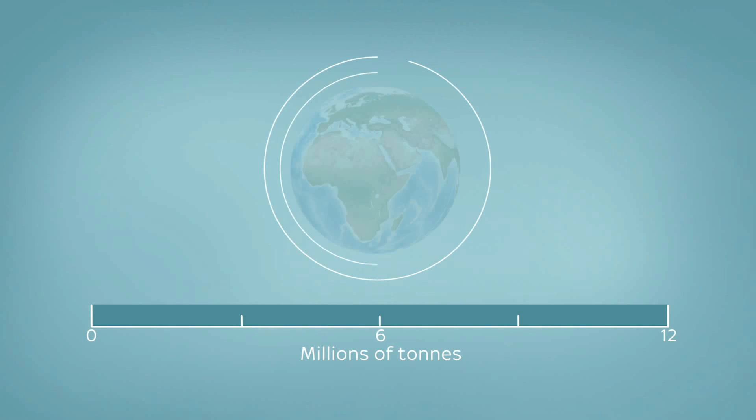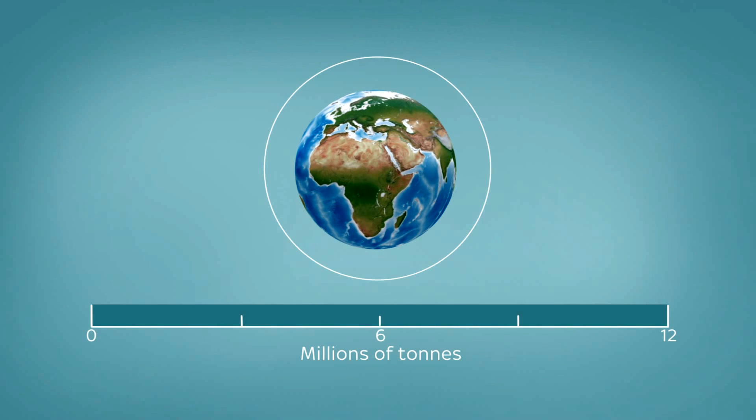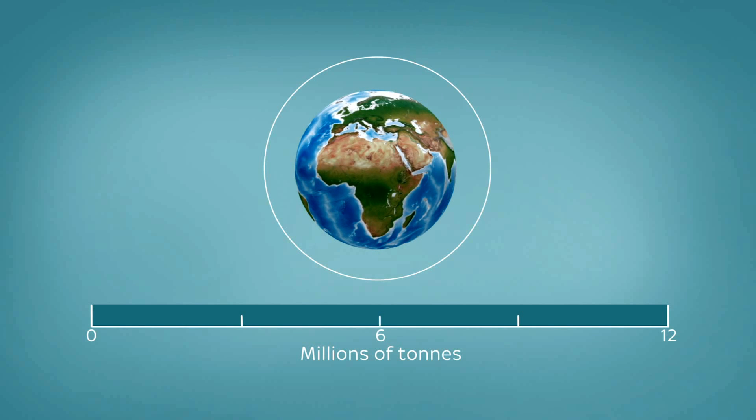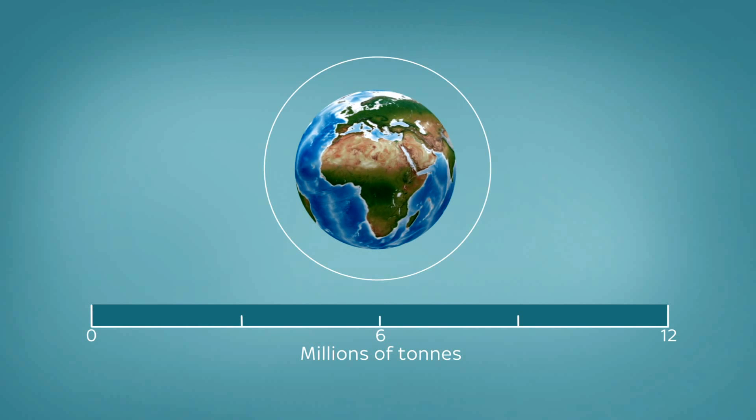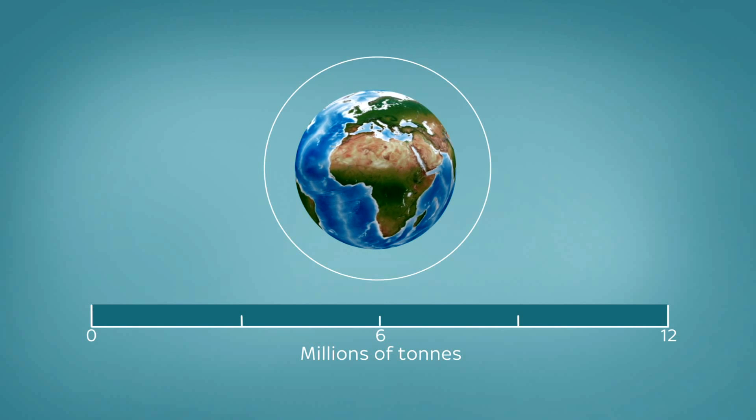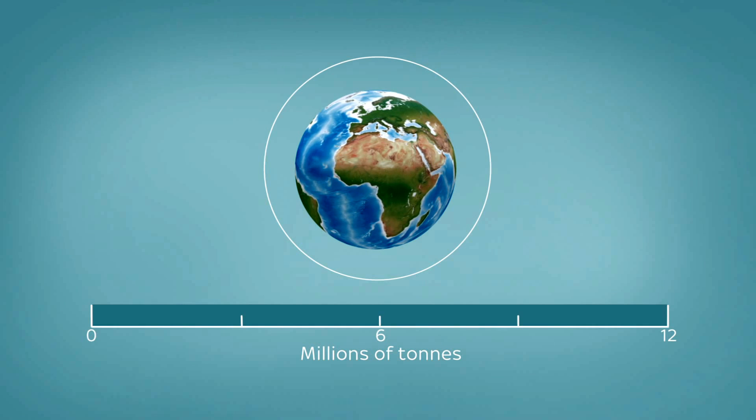None of those examples would require a huge change in lifestyle, but if we all did all of them, we'd save 13.6 million tonnes of CO2 and we'd beat our target of reducing emissions by 2.5% in the first year. Beyond that, things get a little more drastic.